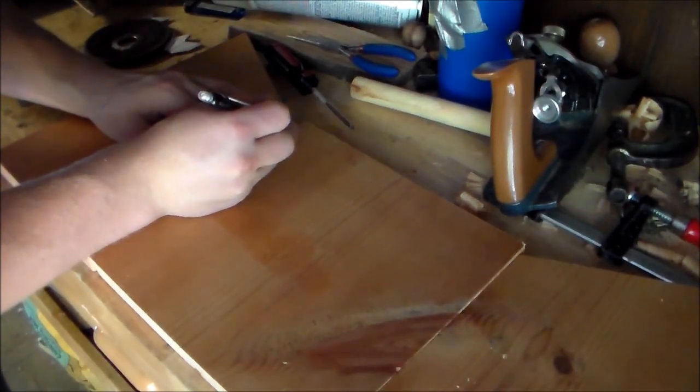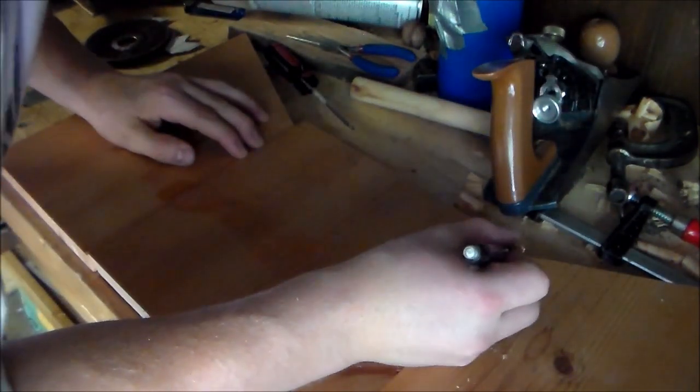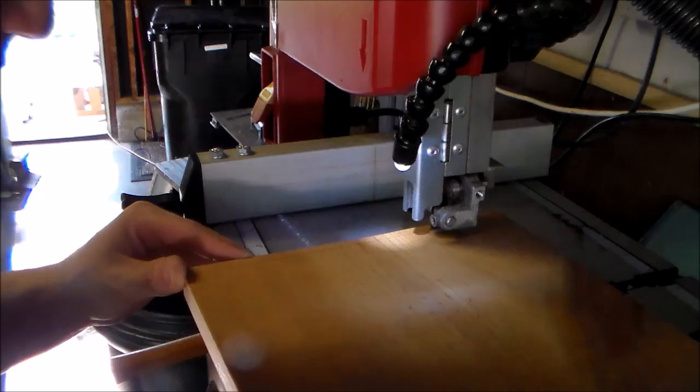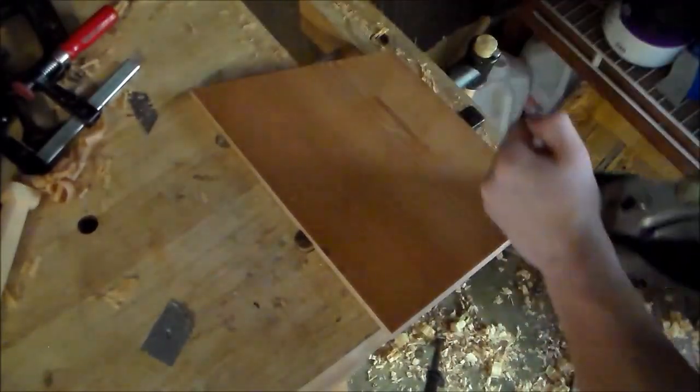With the sides all set, I lined them up with the front of the box and marked where I needed to cut off so that the corners matched up. And then I started flattening these guys.